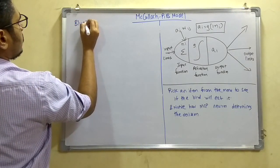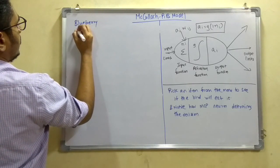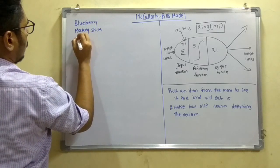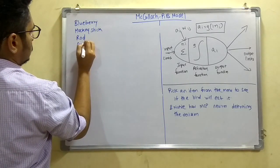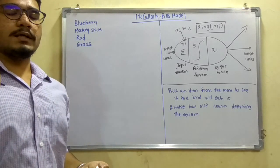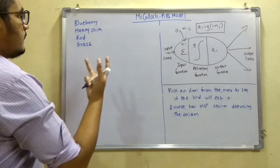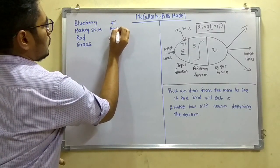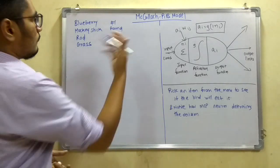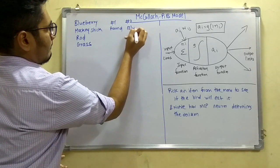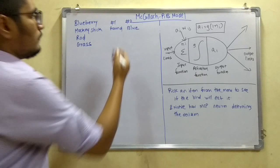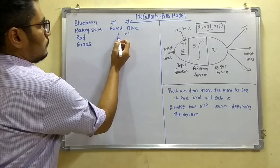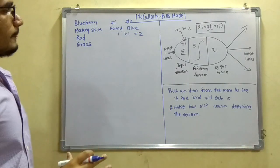So the menu consists of blueberry, then it has a hockey stick, then it may have a rod, and then it may have grass. Now in this example, we take two parameters. The bird will eat the blueberry, so blueberry is a fruit. This fruit will be round in shape - so that parameter is number one: round. And this blueberry will have some color like blue or purple or violet, so we'll take it as blue. These two parameters are laid, so the threshold will be one plus one. For every particular characteristic it detects, we will give a one to this and one to this. So the threshold that we'll be laying out is two.